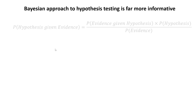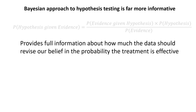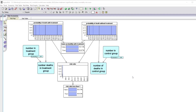What I'm now going to describe is the so-called Bayesian approach to hypothesis testing, which is far more informative. In particular, it provides full information about how much the data should revise our belief in the probability that the treatment is effective. We'll demonstrate the model in action. Here's our Bayesian model — it's actually a Bayesian network.